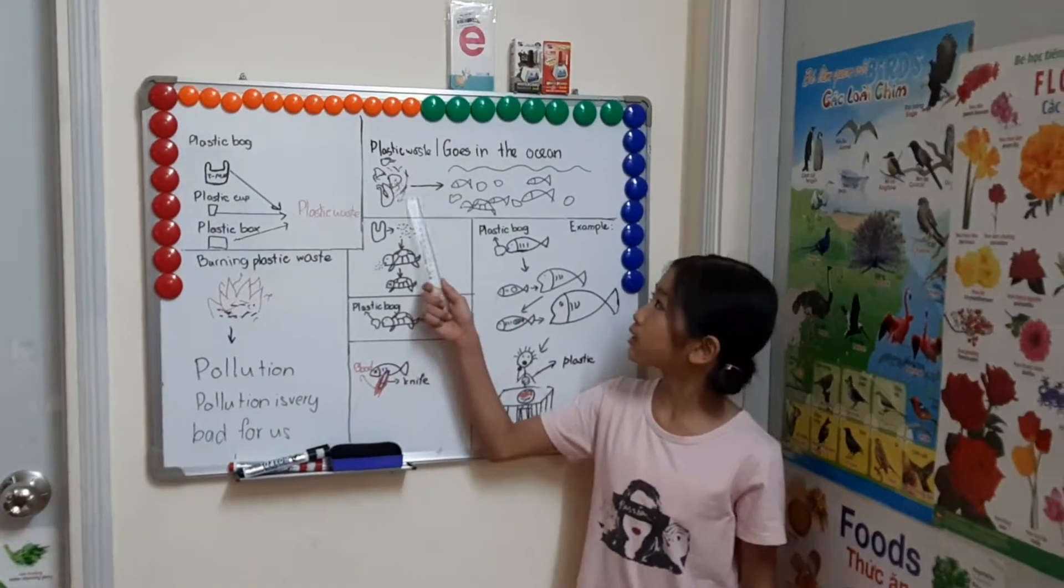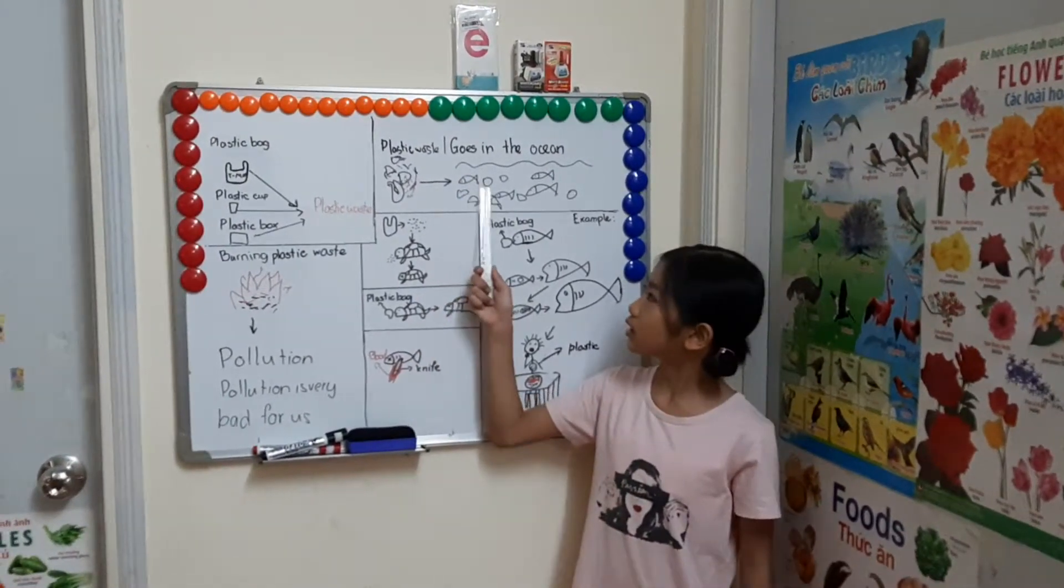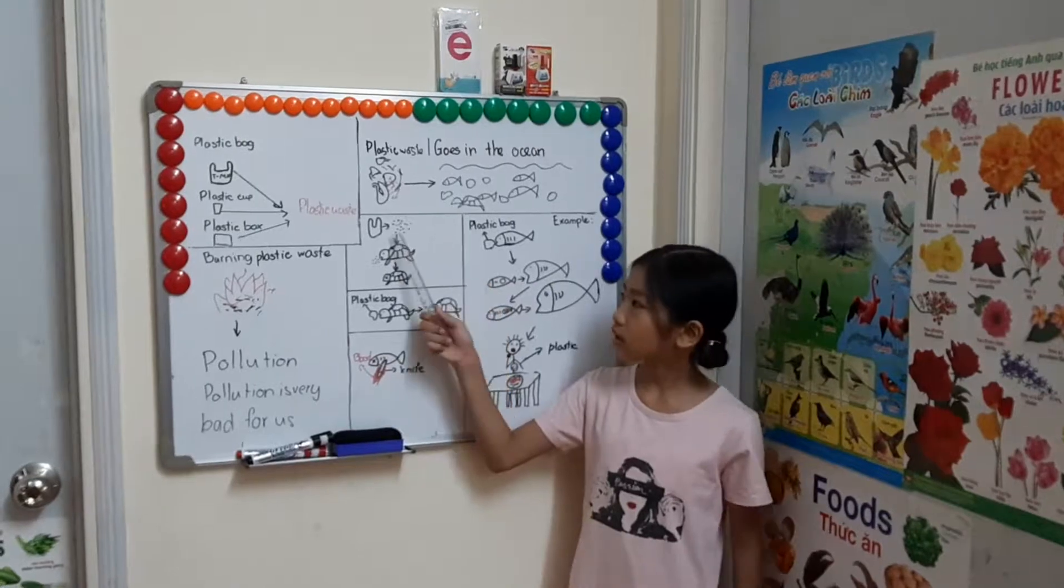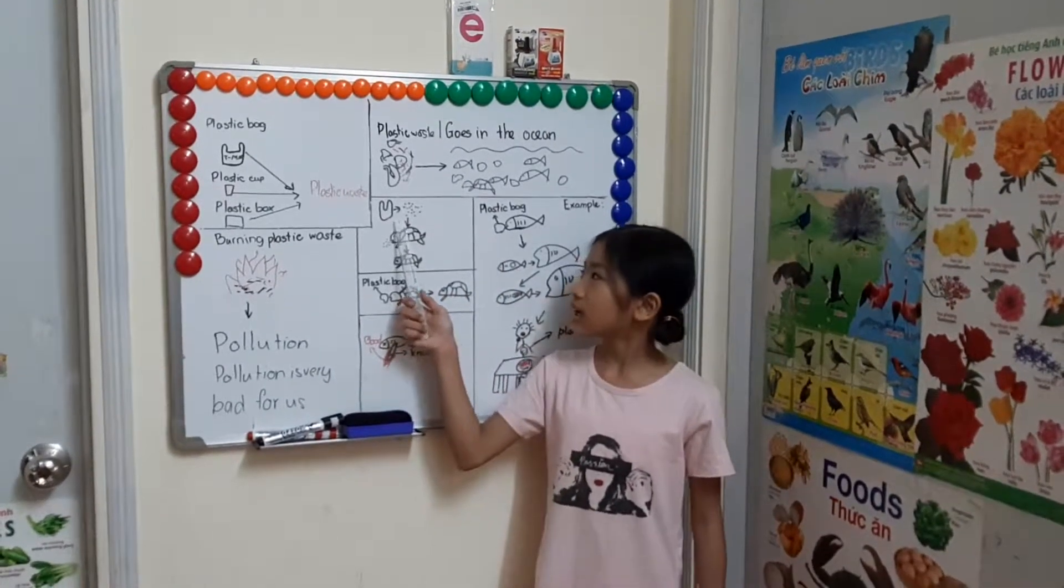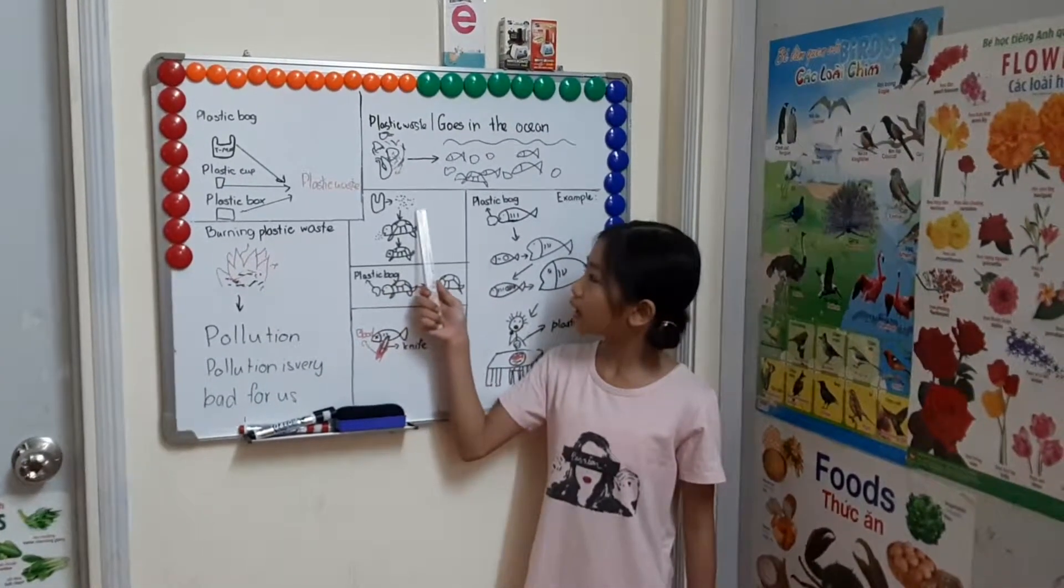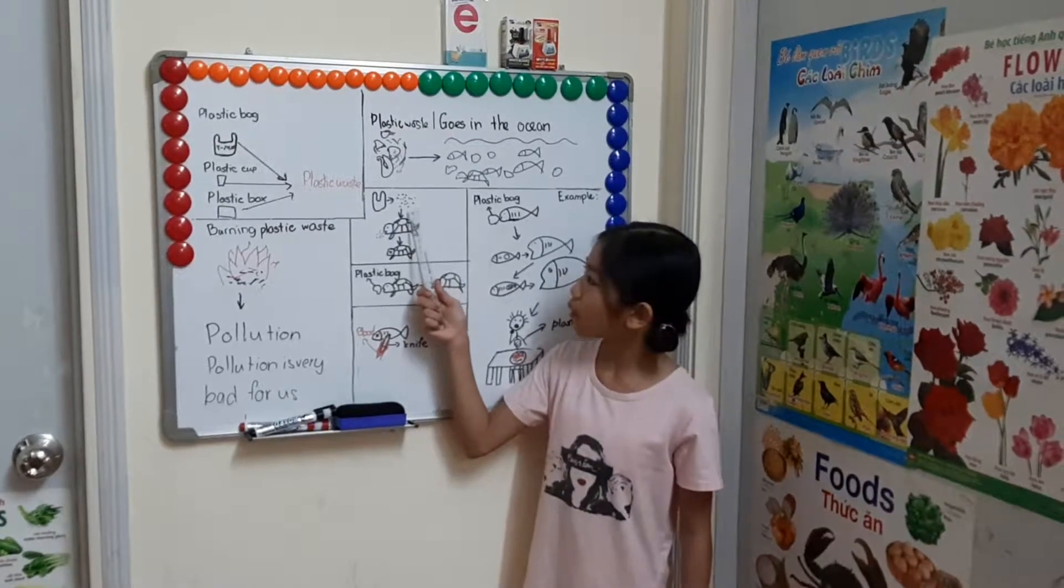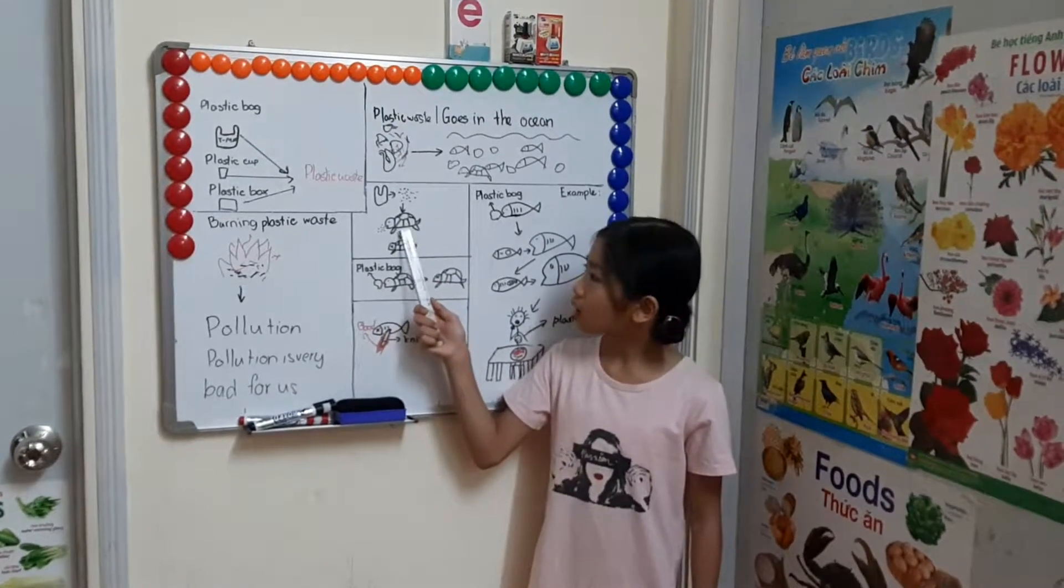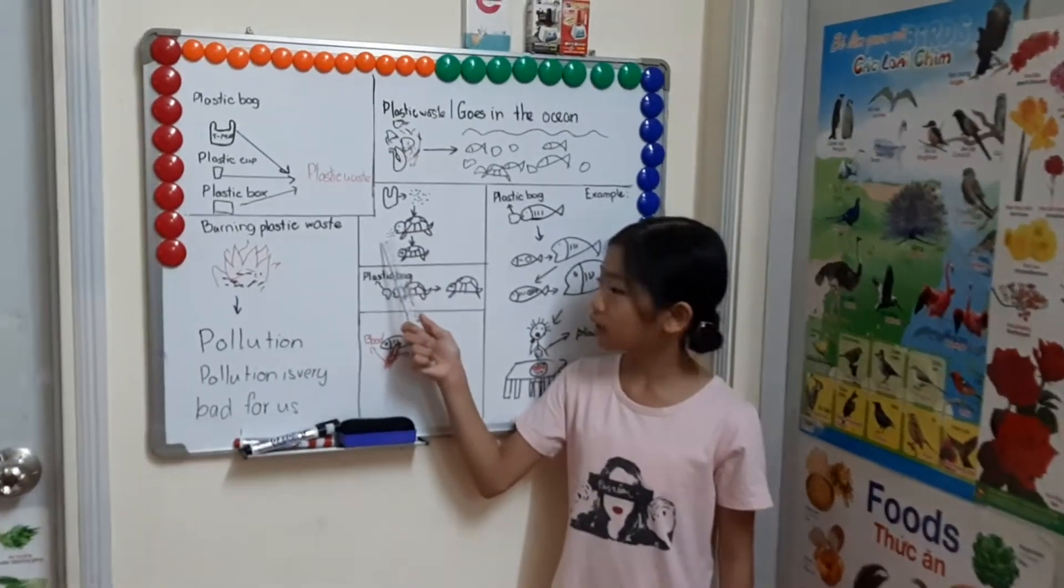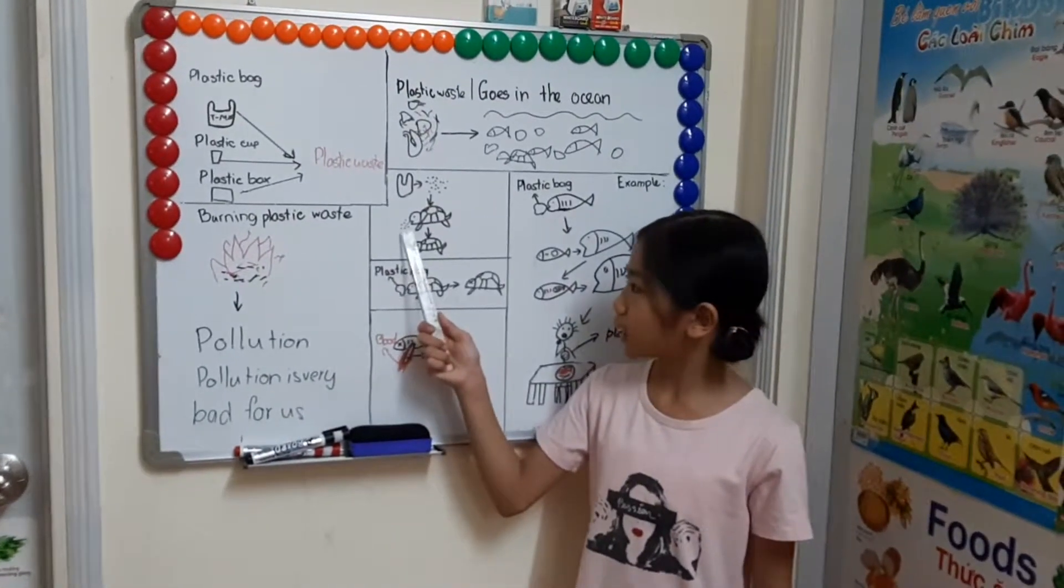Some plastic waste goes into the ocean. Many animals live in the ocean. The plastic waste can break into small pieces, and the animals eat the pieces of plastic.